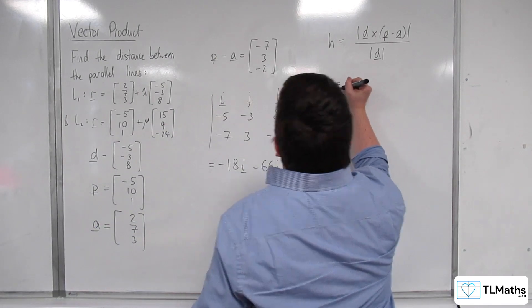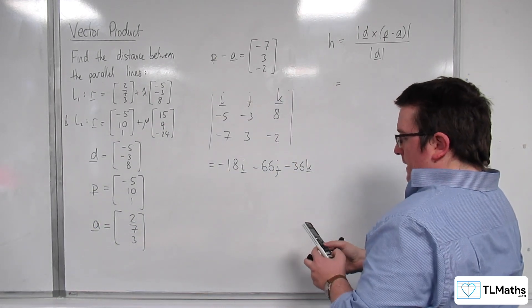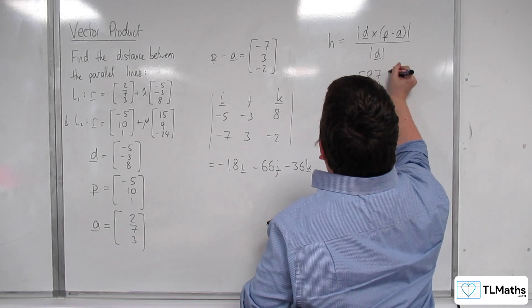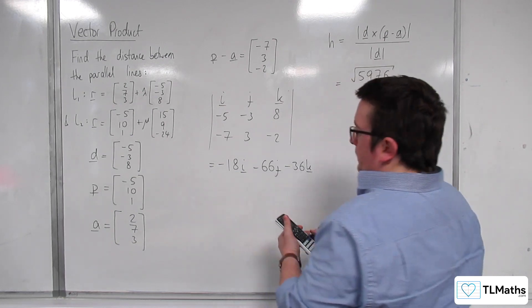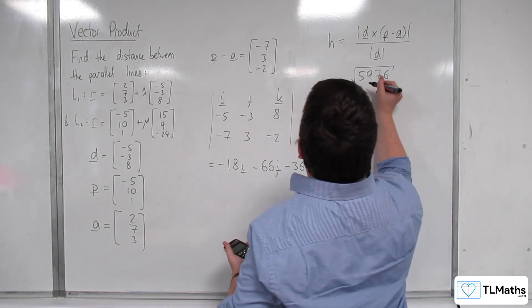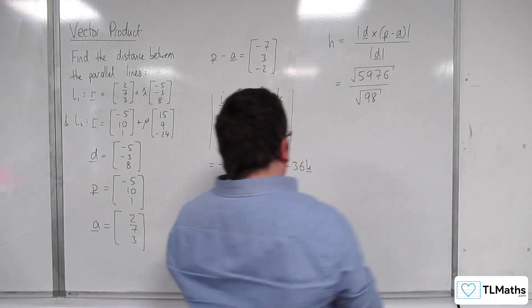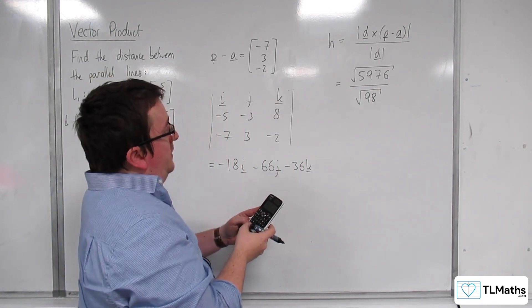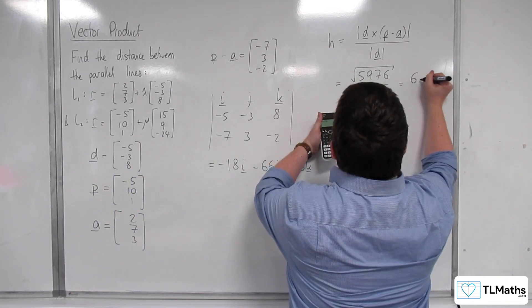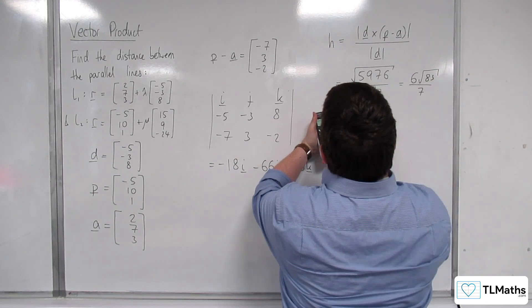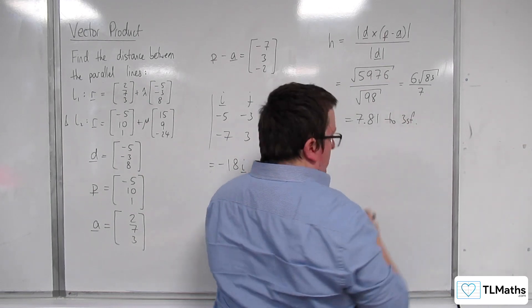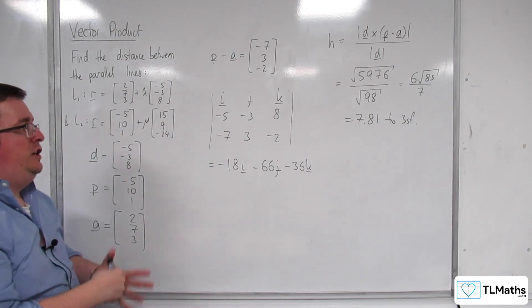This will be equal to the length of this vector. So root of 18 squared plus 66 squared plus 36 squared, which is root 5976, divided by the length of D, so 25 plus 9 plus 64, which is root 98. So root 5976 divided by root 98 is 6 root 83 over 7, which is 7.81 to 3 significant figures. And so that's how we can use the formula.